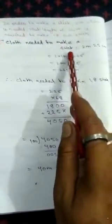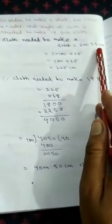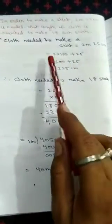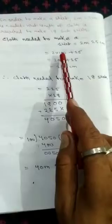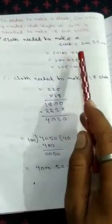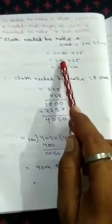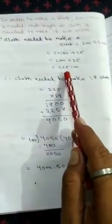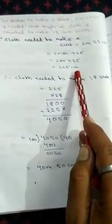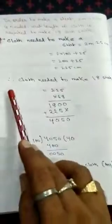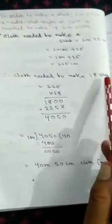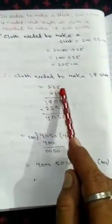The cloth needed to make a short is 2 meters 25 centimeters, that is for one short. That is 2 meters, that is 2 into 100, you convert in centimeter, plus 25. That is 200 plus 25 centimeters. That is 225 centimeters cloth is needed for making one short. Therefore, cloth needed to make 18 shorts, you have to multiply 225 into 18.